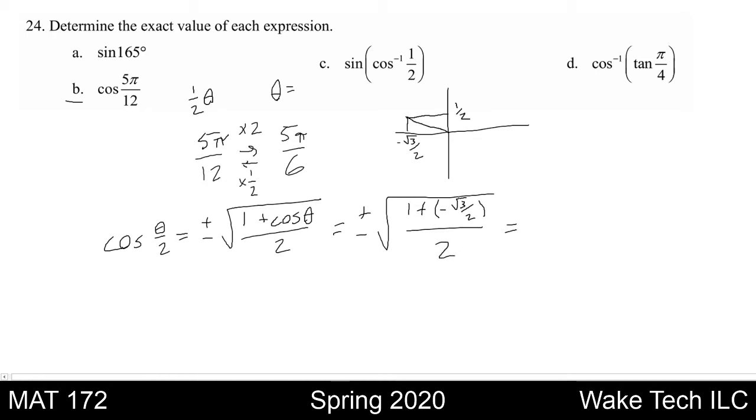Now this fraction inside the square root can be simplified by multiplying the numerator and denominator by 2. Additionally, I can treat the addition by a negative number the same as subtraction. And I'll end up with something like ±√(2 - √3) all over 4.